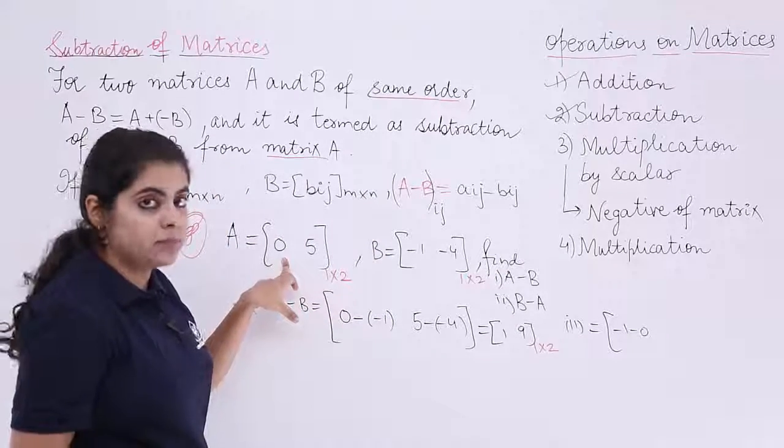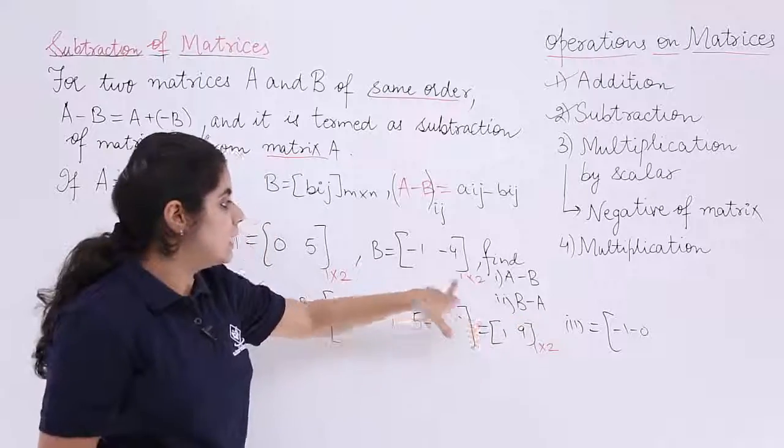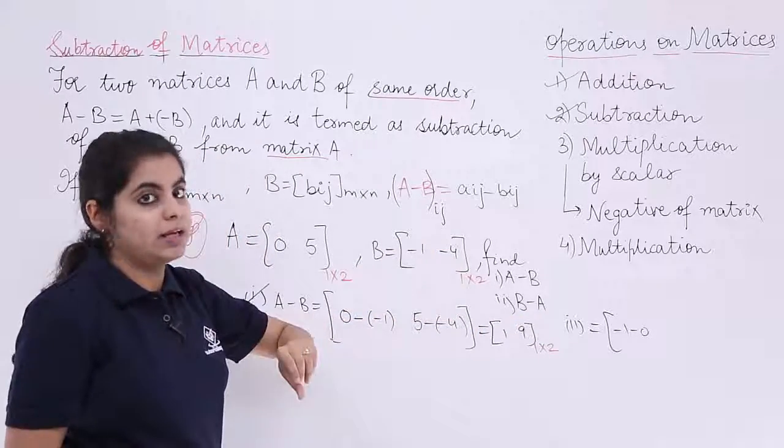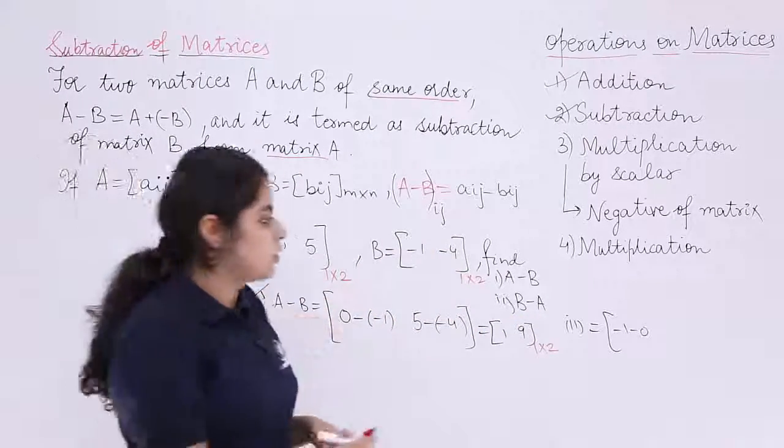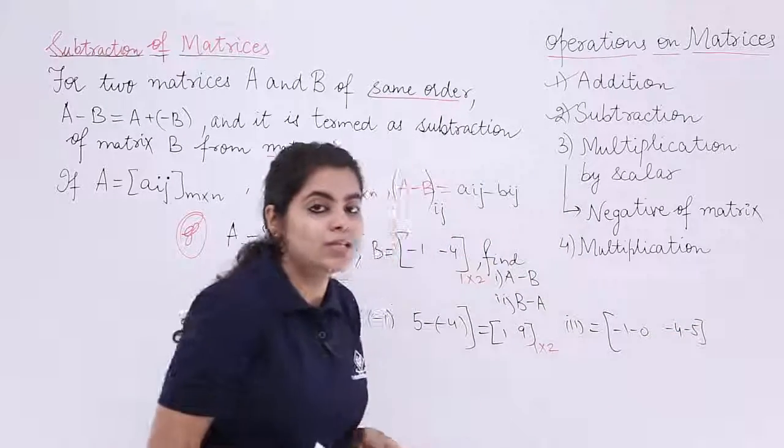B minus A. What about the next element? The next element here in B minus A, that means I have to write first B which is minus 4 minus 5. So it is minus 4 minus 5. So what is the answer?